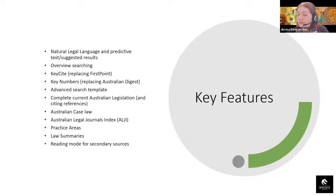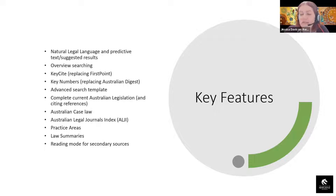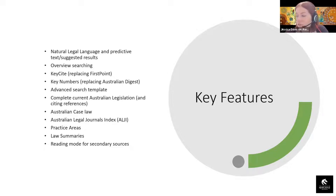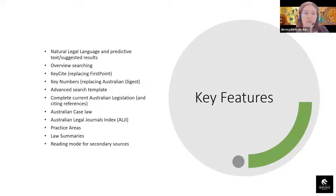The key features available include natural legal language and predictive text with suggested results. When using the global search bar in Westlaw, it has natural language with predictive text — very similar to Westlaw Classic but with a couple more options. We also have overview searching, which is quite different from Westlaw Classic. When you're searching from the homepage, there's no specification as to content type yet, so you search across all content. You'll then be taken to an overview page which gives you the options to break down the content types that you can browse through.